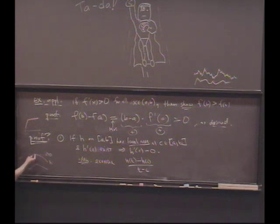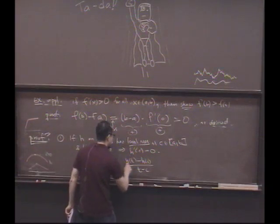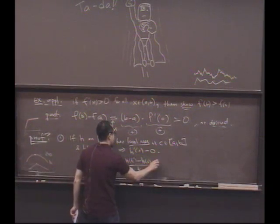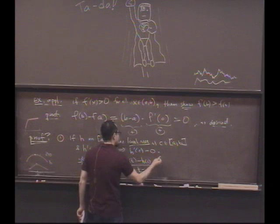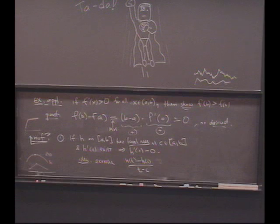If h has a local maximum at the point c, what has to be true about h of t minus h of c, no matter which side I'm on? If it has a local maximum at c, this thing's going to be what? Negative. It has to be negative because c is a local maximum.